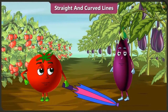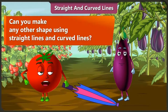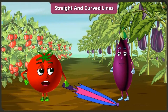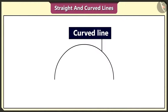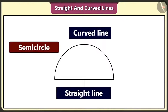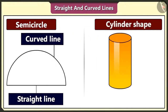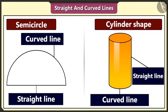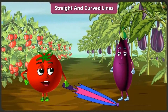Bingu asks: can we make any other shape using straight and curved lines, like we made an umbrella? Using a curved line and a straight line, we can make a semicircle like this. And yes, a cylinder shape is also made using curved and straight lines. Ha ha ha, we had so much fun and enjoyed the rain too!